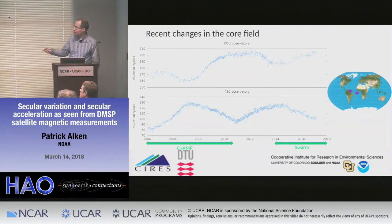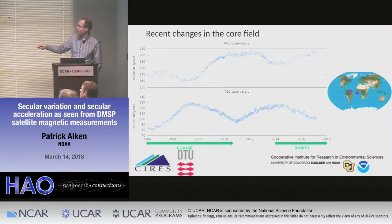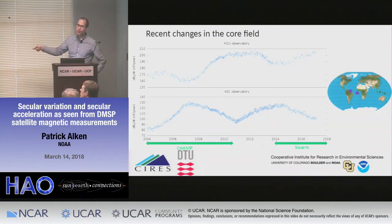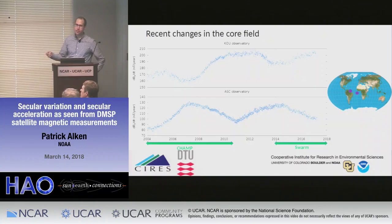We had really nice global data coverage from CHAMP up until 2010, and the Swarm mission was launched here, giving us nice coverage again. But a lot of interesting things happened in this gray gap period, so we hope to use DMSP data to fill in the global knowledge. The slope of the curve you're looking at is the first time derivative — that's the variation. The derivative of this curve is the acceleration, so a positive slope means positive acceleration. When you have a minimum feature, that means the acceleration itself is rapidly changing — that's a third time derivative, called a jerk.